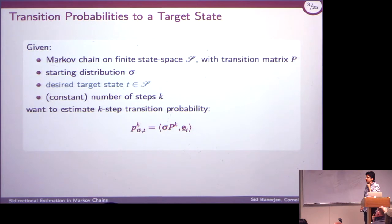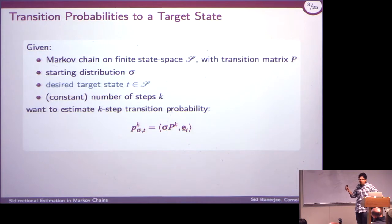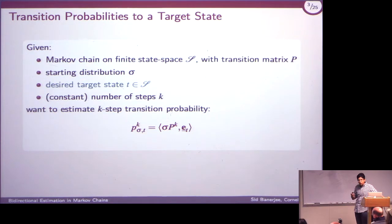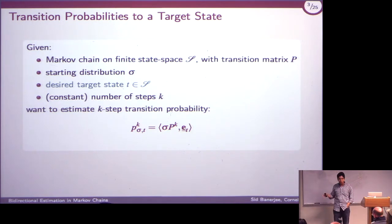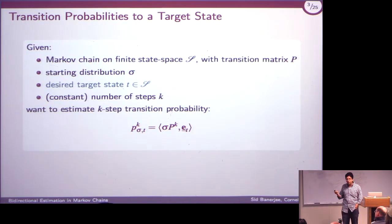This is the problem I'm going to talk about today, and it's literally as simple as it gets in Markov chains. Someone has given me a finite state space Markov chain with transition matrix P. There's some starting distribution sigma, and I want to know what's the probability that after taking K steps following this transition matrix P, I end up in some target state T. You could do the power method, or just do Monte Carlo — so why am I interested in this all of a sudden?